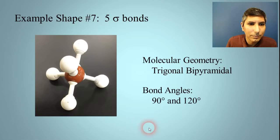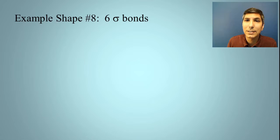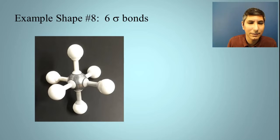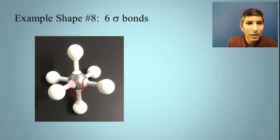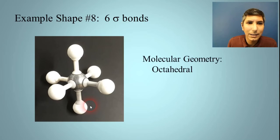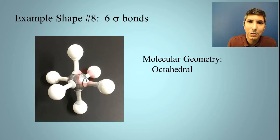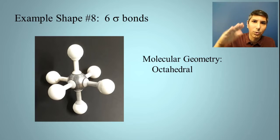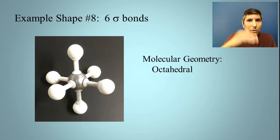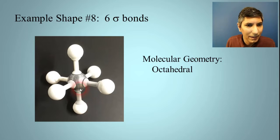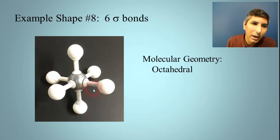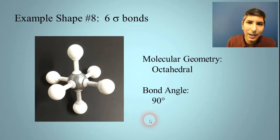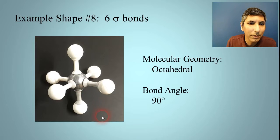What about six sigma bonds? This is called octahedral. You might wonder why, if it has six sigma bonds — well, if you connect the dots you get a solid with eight faces: four on top and four on the bottom, kind of like a diamond. Every single bond angle is perpendicular — 90 degrees. It kind of looks like one of those little jacks that kids used to play with.